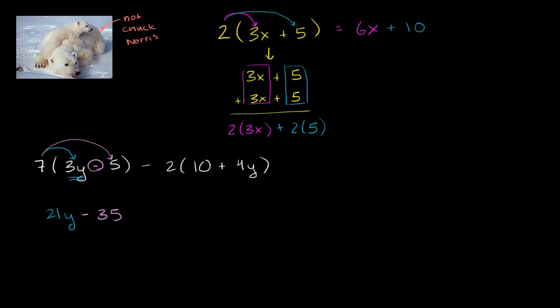Let's simplify the right-hand side. So you might be tempted to say 2 times 10 and 2 times 4y and then subtract them. And if you do that right and you distribute the subtraction, it would work out. But I like to think of this as negative 2, and we're going to distribute the negative 2 times 10 and then negative 2 times 4y.